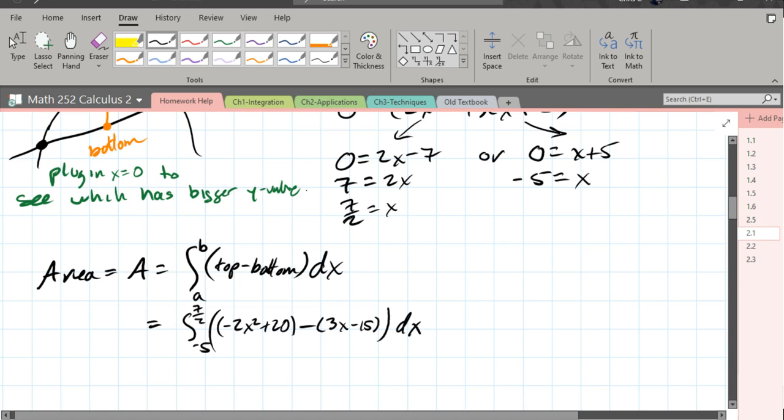Now, to integrate this, we just have the anti-power rule here. You just combine your constants together and then just do the little anti-power rule. Plug in your endpoints and you're done.